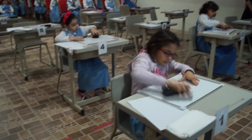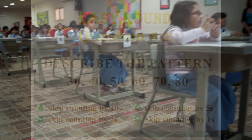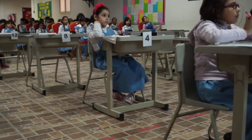Step 2. Describe the pattern: 30, 40, 50, 60, 70, 80. Again, describe the pattern: 30, 40, 50, 60, 70, 80. A: Skip counting by 10s?